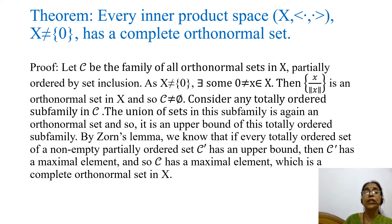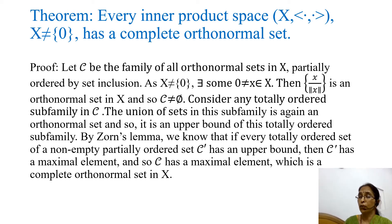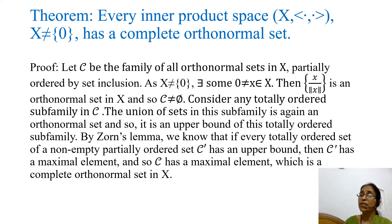By Zorn's lemma, if every totally ordered set of a non-empty partially ordered set C has an upper bound, then C has a maximal element. Here, since the family C of orthonormal sets is a non-empty partially ordered set in which any totally ordered set has an upper bound, this partially ordered set has a maximal element. This means there exists a maximal orthonormal set in X, and a maximal orthonormal set is a complete orthonormal set. So there always exists a complete orthonormal set in X.